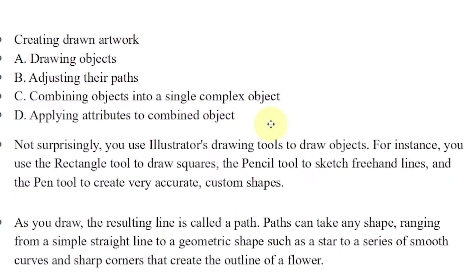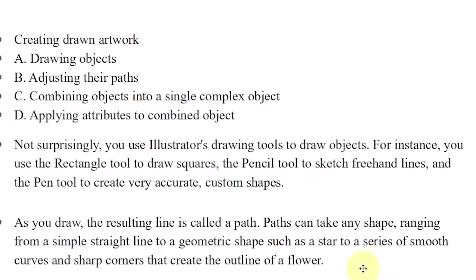You'll be using Illustrator's drawing tools to draw objects. You will use the rectangle tool to draw squares, the pencil tool to draw and sketch freehand lines, and the pen tool to create very accurate custom shapes. As you draw, the resulting line is called a path. Paths can make any shape ranging from simple straight lines and geometric shapes such as a star to a series of smooth curves and sharp corners that create the outline.